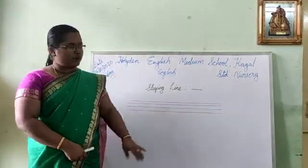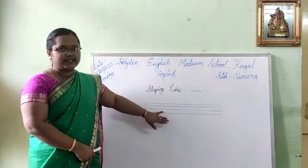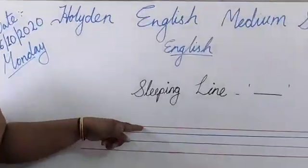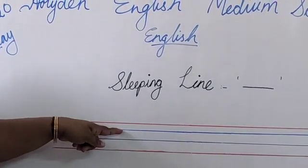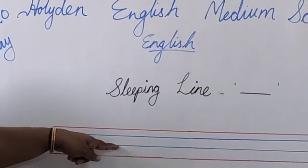In our English notebook, there are four lines. The first line is red line. The second one is blue line. The third line is blue line. And the fourth line is red line.